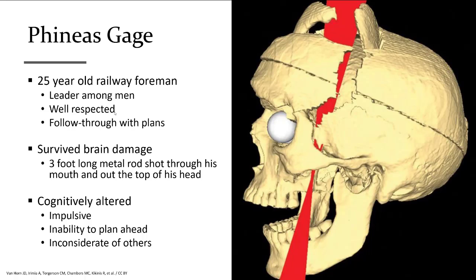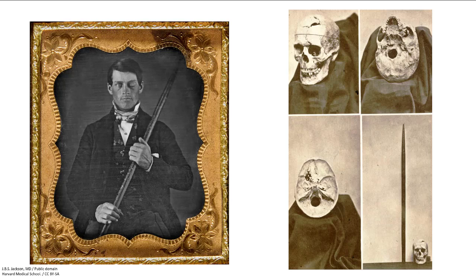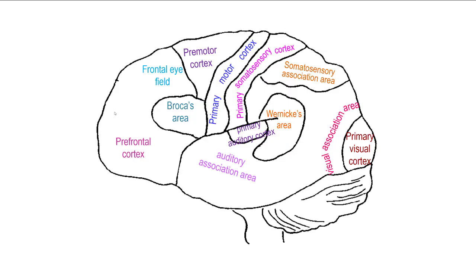The most famous brain patient who contributed significantly to the study of the frontal lobe is Phineas Gage, a railway worker reported to be well-respected and likely in a leadership position. An explosion shot a three-foot-long, inch-and-a-quarter-wide rod through his mouth and out of his skull. He eventually lost function of his left eye due to infection, but his survival was remarkable. However, he was a changed man in personality and behavior. Phineas lived for 12 more years, and his skull is held at the Warren Anatomical Museum at Harvard Medical School, along with the metal rod that impaled him.